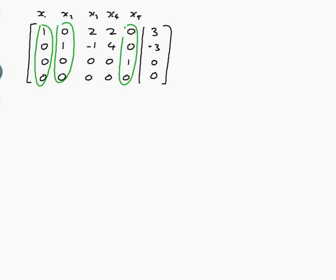So we've got three pivot columns, which means we have three basic variables. A basic variable is a variable that corresponds to one of the pivot columns, so x1, x2, and x5 are basic variables.